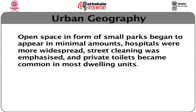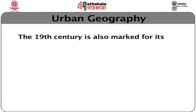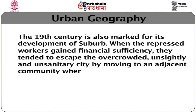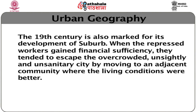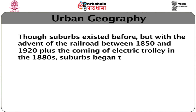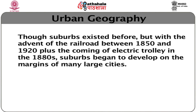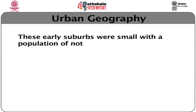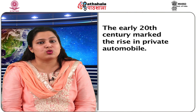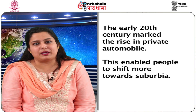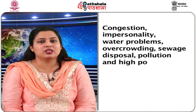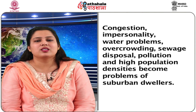However, the 19th century saw advances being made in the production of glazed drains and cast iron pipe, enabling the distribution of better quality water to increasing numbers of dwellings and the disposal of sewage. Open space in the form of small parks began to appear. Hospitals were more widespread, street cleaning was emphasized, and private toilets became common. The 19th century is also marked for its development of suburbs. When repressed workers gained financial sufficiency, they tended to escape the overcrowded, unsanitary city by moving to adjacent communities where living conditions were better. With the advent of the railroad between 1850 and 1920 and the coming of the electric trolley in the 1880s, suburbs began to develop on the margins of many large cities. The early 20th century marked the rise of the private automobile, enabling people to shift more towards suburbia. However, problems of congestion, impersonality, water problems, overcrowding, sewage disposal, and pollution reappeared in suburban settings.